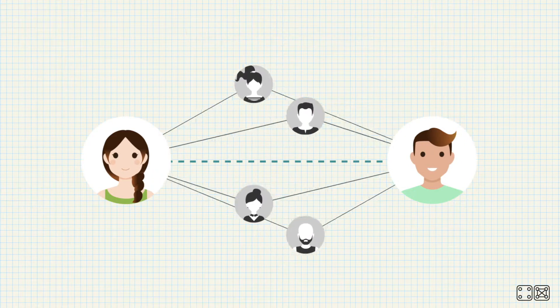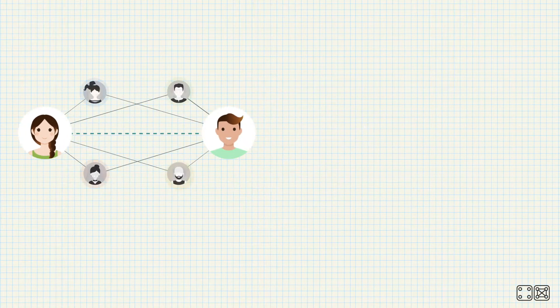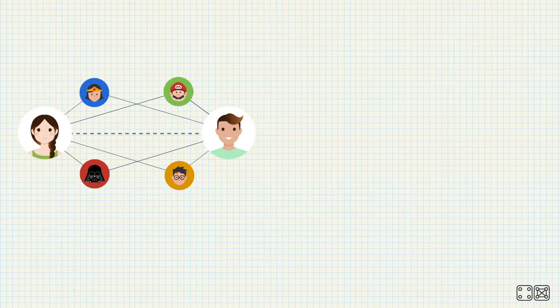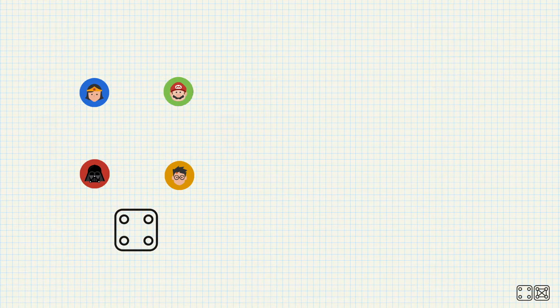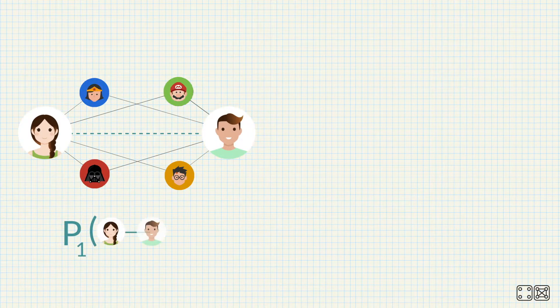Let's consider two scenarios. In the first scenario, Alice and Bob have four friends in common. None of these common friends know each other. In this scenario, we're interested in the probability of Alice and Bob dating, given four common friends who don't know each other.